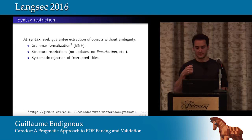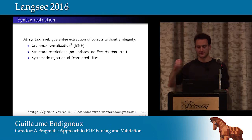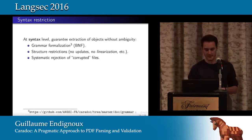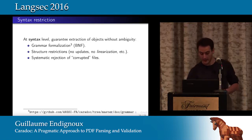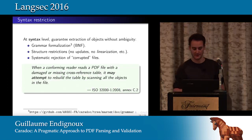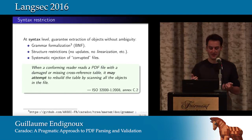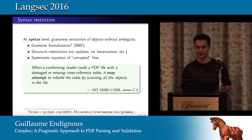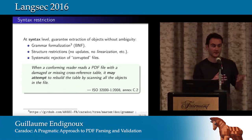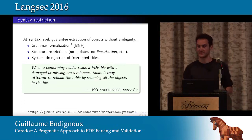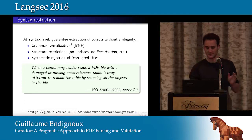We also implemented structural restrictions — we don't allow updates, linearization, or complex structures that aren't strictly necessary to display a file but add parsing complexity. We systematically reject corrupted files, whereas the ISO specification says a conforming reader encountering a damaged or missing cross-reference table may attempt to rebuild it by scanning all objects. Each PDF reader does whatever it wants, which is what we don't want.